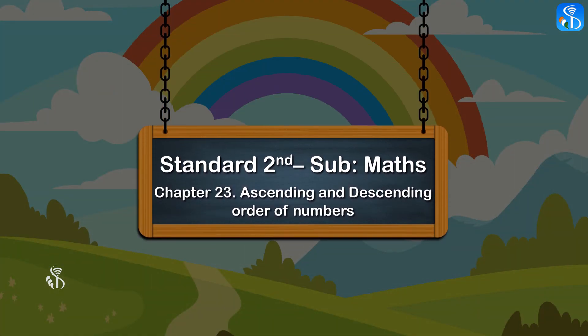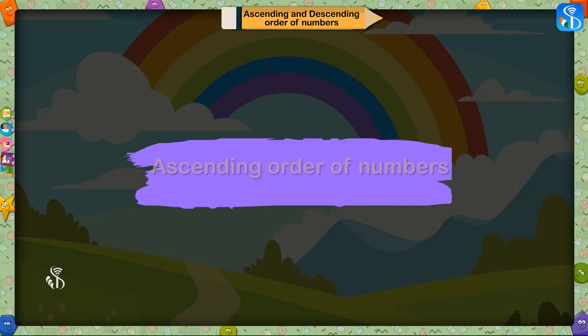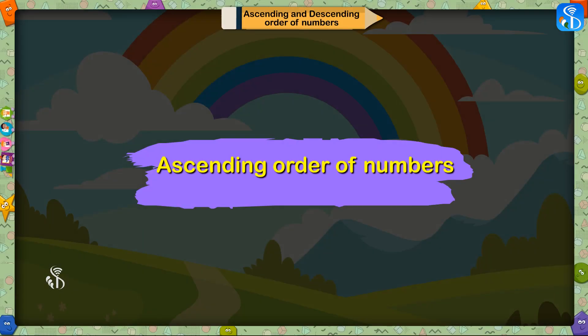Standard 2. Subject: Maths. Chapter 23: Ascending and Descending Order of Numbers. Ascending Order of Numbers.